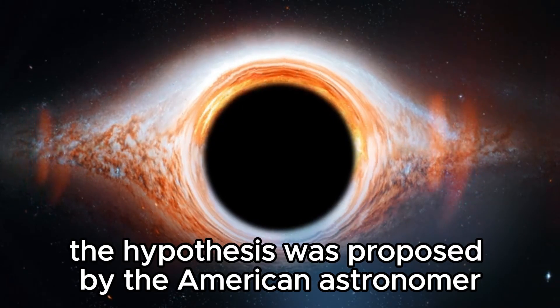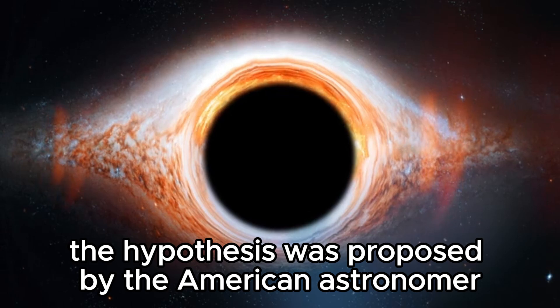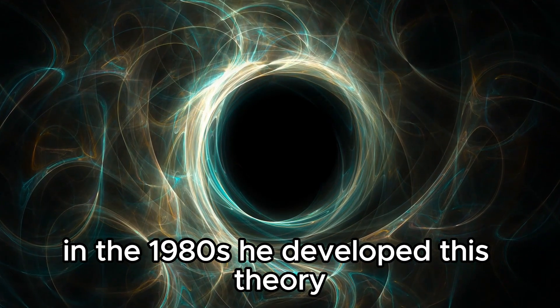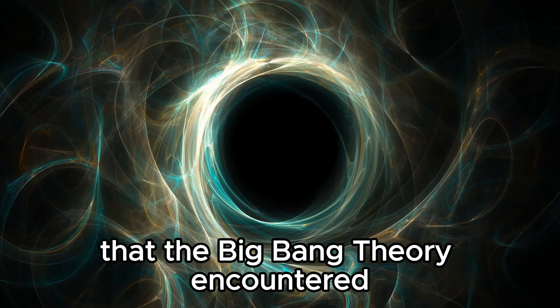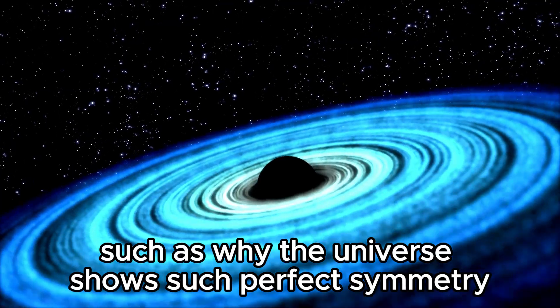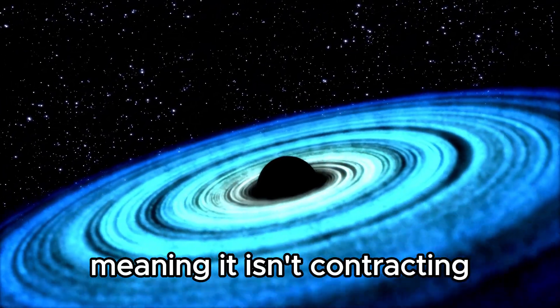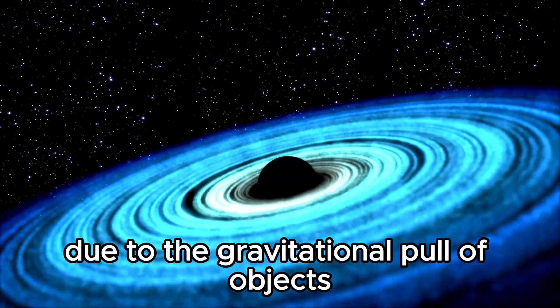The hypothesis was proposed by the American astronomer and physicist Alan Guth in the 1980s. He developed this theory to address certain questions that the Big Bang theory encountered, such as why the universe shows such perfect symmetry or why it has a round shape, meaning it isn't contracting due to the gravitational pull of objects.